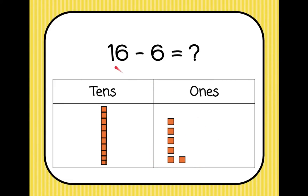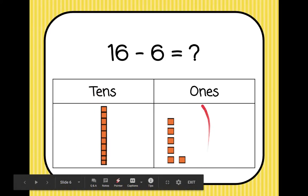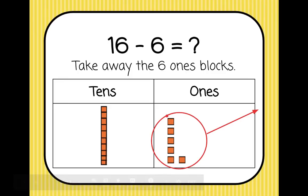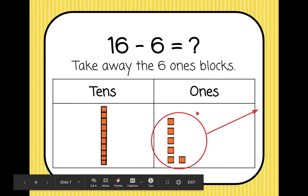So we're going to do 16 and this is 16 here minus 6, all of the ones. So first we are going to take away the six ones blocks and I've shown that by circling them and drawing an arrow to show that they're being taken away.